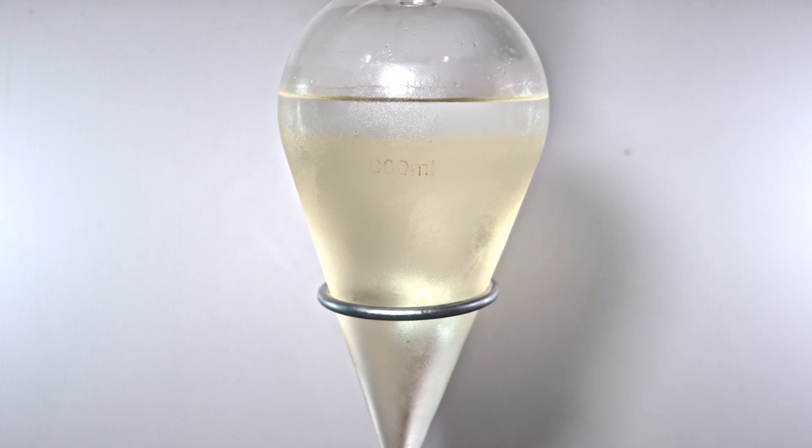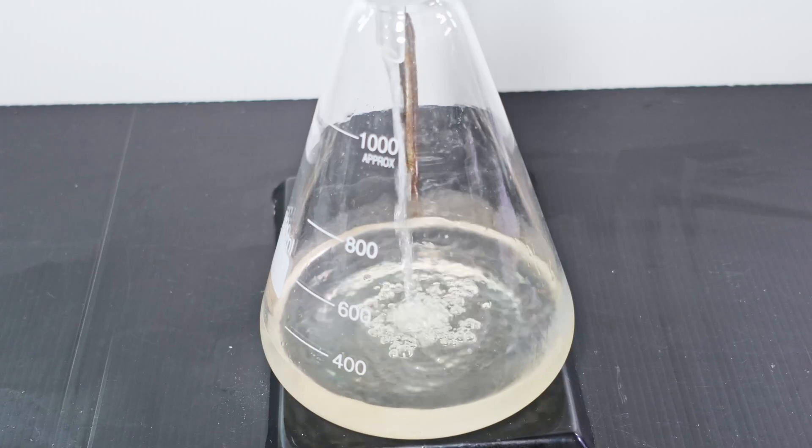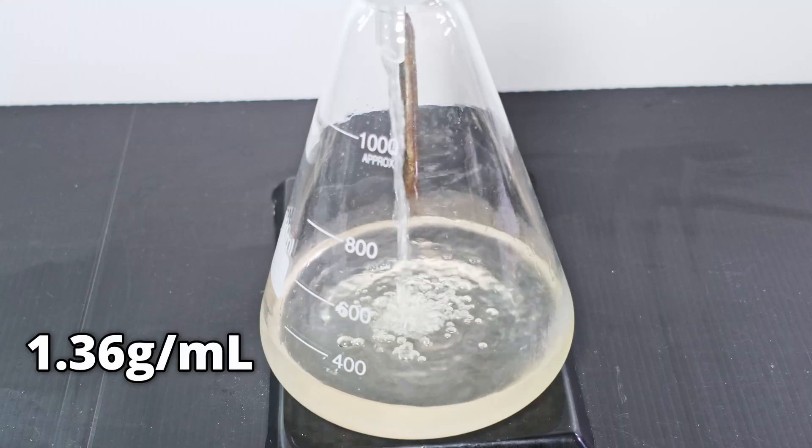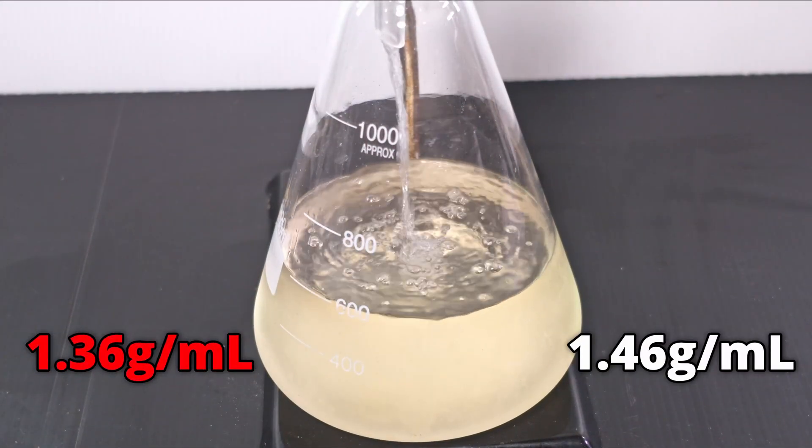I separate the much larger halide layer from the top alcoholic layer. The bottom crude layer is 1.36 grams per milliliter, a far cry from the 1.46 ethyl bromide is noted to be.